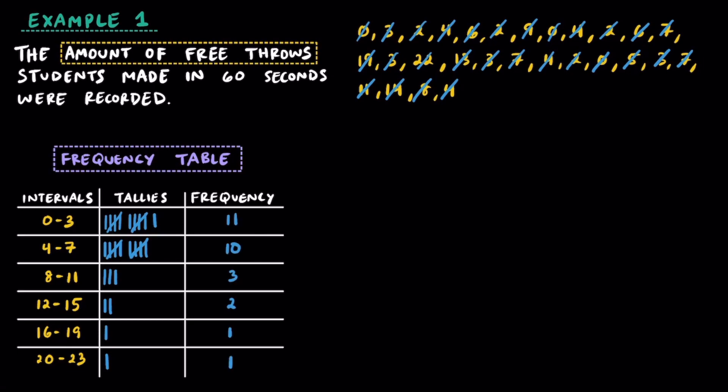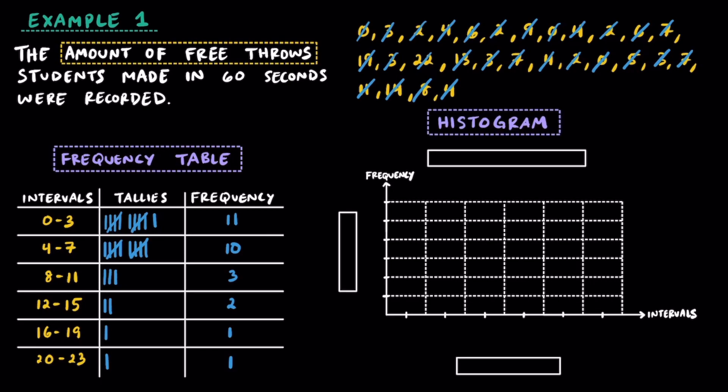Now that our frequency table is complete, let's go ahead and work on our histogram. Here's an amazingly creative title of free throws, and we can go ahead and label the x-axis or intervals as free throws or the number of free throws, and then along the y-axis or the frequency, we're going to call this the number of people.